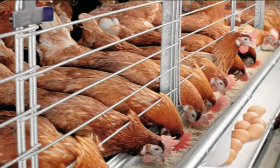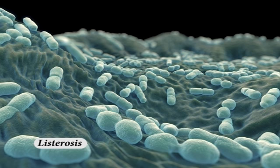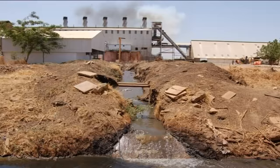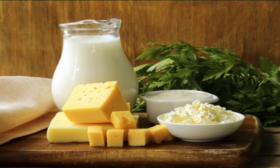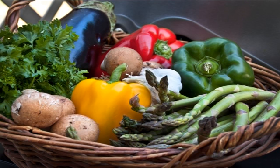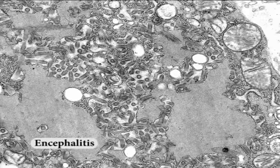Campylobacter jejuni is contracted from drinking untreated water, contact with infected pets, and when contaminated meat, poultry, milk or shellfish is eaten raw or undercooked. Symptoms may develop in 2–10 days and may include severe diarrhea, cramps, fever and headache lasting up to 10 days. Listeria monocytogenes, which causes listeriosis, is spread in untreated water, unpasteurized milk and dairy products, raw meats and seafood, and raw vegetables infected by manure fertilizer. Potential complications include meningitis or encephalitis, blood poisoning, spontaneous abortion and stillbirth. In rare cases the disease can be fatal.